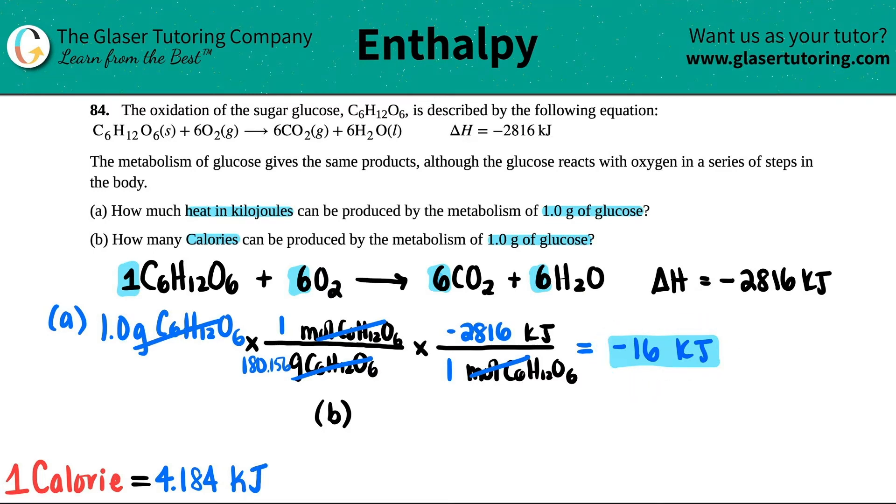Well, we just learned that for every 1 gram of glucose, we're going to be able to produce 16 kilojoules, right? So whether you want to put negative 16 or 16 kilojoules, remember the negative just means released.